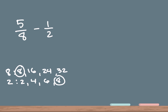The next step is to rewrite our problem. I'm gonna put an equal sign right here, and then our first number is gonna be 5 over 8. For the next number, we take 2 times 4 to get it to an 8. Whatever you do to the bottom number you have to do to the top number, so we're gonna take 1 times 4 on top as well — so that's 4 over 8.